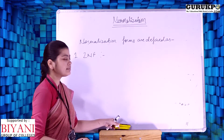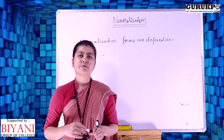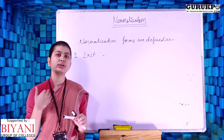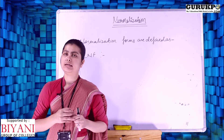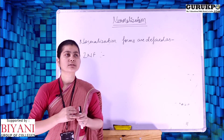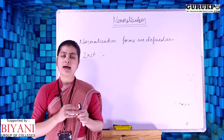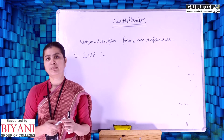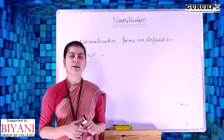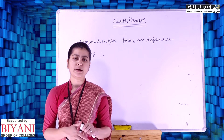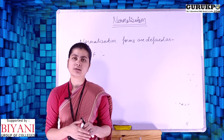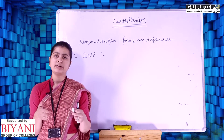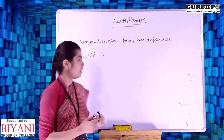Let's talk about Second Normal Form. A relation is in Second NF if it is in First NF and every non-key attribute is fully functionally dependent on a key attribute — that is, we have to remove partial functional dependency. We can remove partial functional dependency by dividing a single table into two or multiple tables.